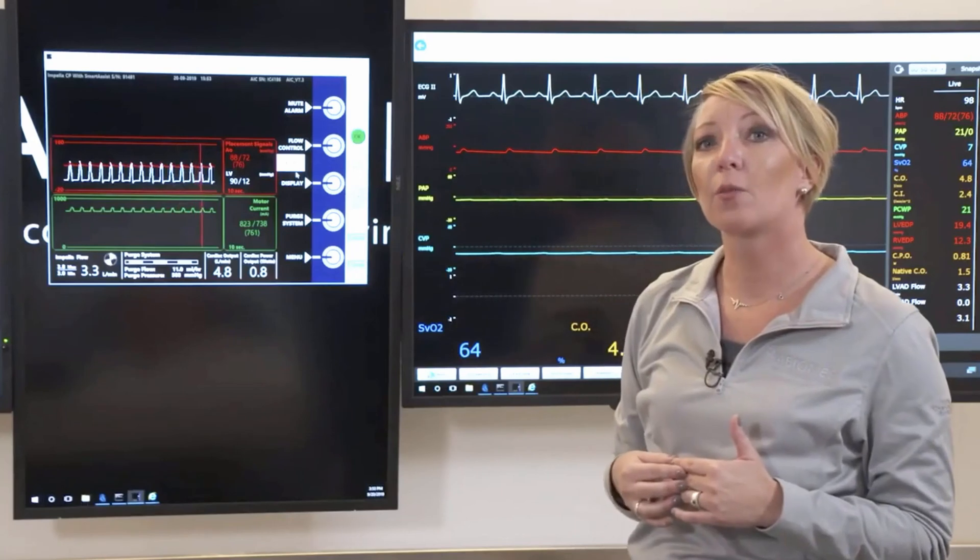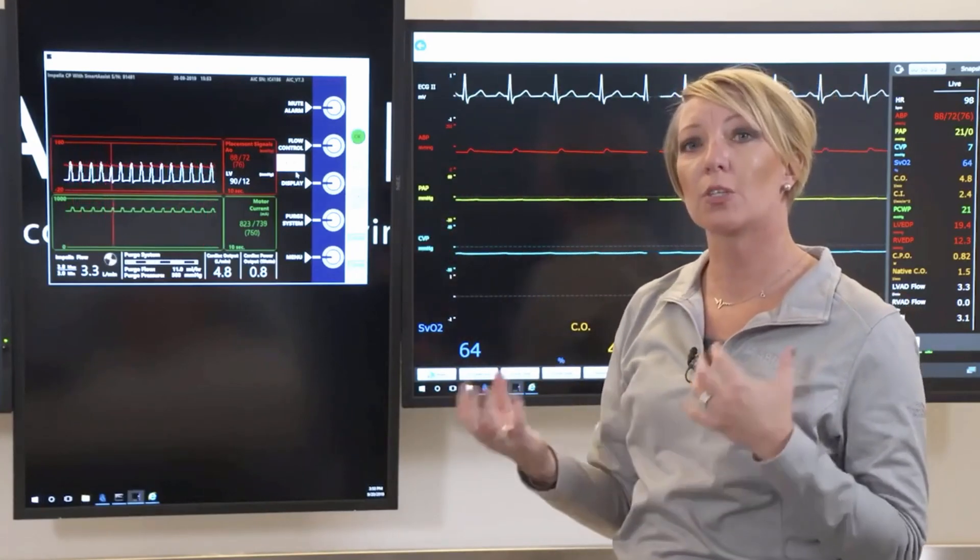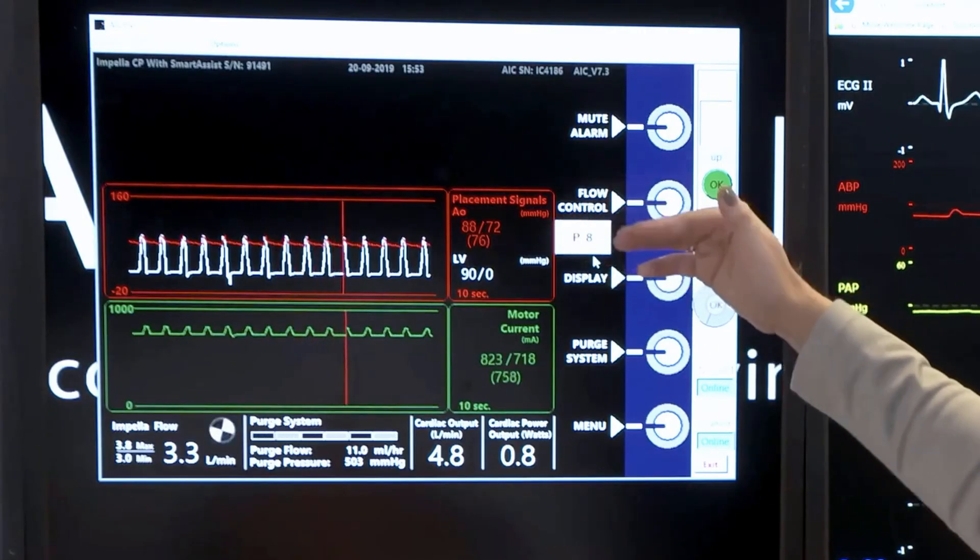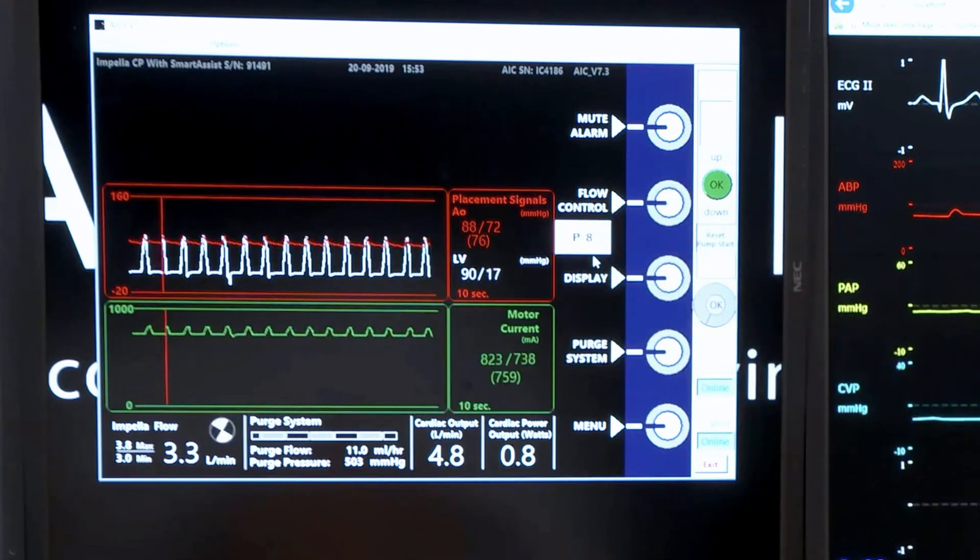You'll also notice that we have a red waveform or our placement signal waveform. This is going to give us two different waveforms: the AO waveform and the LV waveform. The AO waveform is simply from that optical sensor.